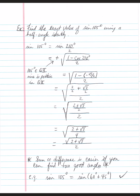Two negatives make a positive. Write 1 as 2/2 to create a common denominator, giving (2 + √3)/2 inside the square root, all divided by 2. Since dividing by 2 is multiplying by 1/2, that brings the denominator to 4. The numerator stays as is; the denominator 4 is a perfect square so it becomes 2, giving √(2 + √3)/2.